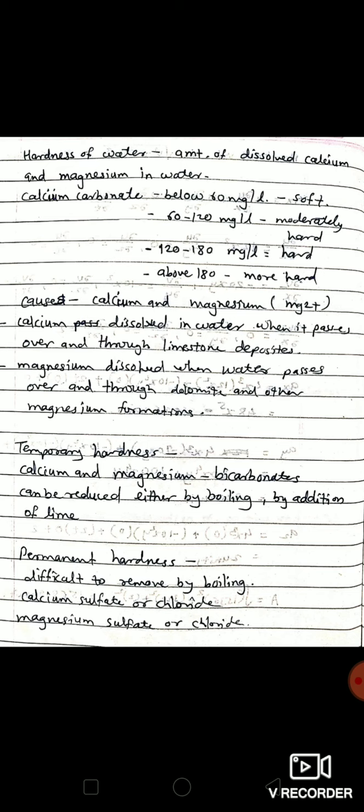Let's see what is meant by hardness. Hardness of water is the amount of dissolved calcium and magnesium in water. When calcium carbonate present is below 60 milligrams per liter, it is soft water. When it is 60 to 120 milligrams per liter, it is moderately hard water.